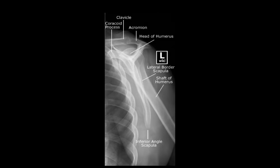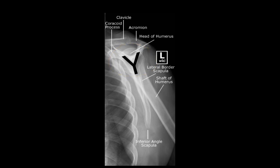Looking from the side, we get a lateral so-called Y view. We can see a Y formed by the body of the scapula forming the stem, then the coracoid process anteriorly, and the spine of the scapula posteriorly. In a normal shoulder, the head of the humerus should lie over the intersection of these three lines. If it's not overlying the intersection, then it must be dislocated. A common pitfall is mistaking the shaft of the humerus as forming part of the Y — it doesn't. The Y is formed by the scapula alone.